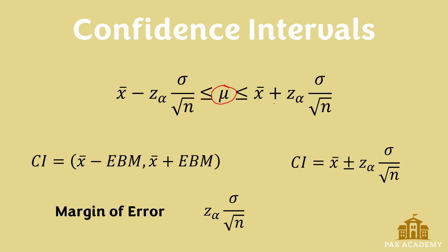The higher value is going to be exactly the same, but with a plus instead. An equivalent way of writing this is that the confidence interval is equal to the sample mean minus the error bound for the mean, comma, sample mean plus the error bound for the mean. A third equivalent formula is that the confidence interval equals the sample mean x-bar plus or minus the margin of error: z-alpha times the population standard deviation over the square root of n.